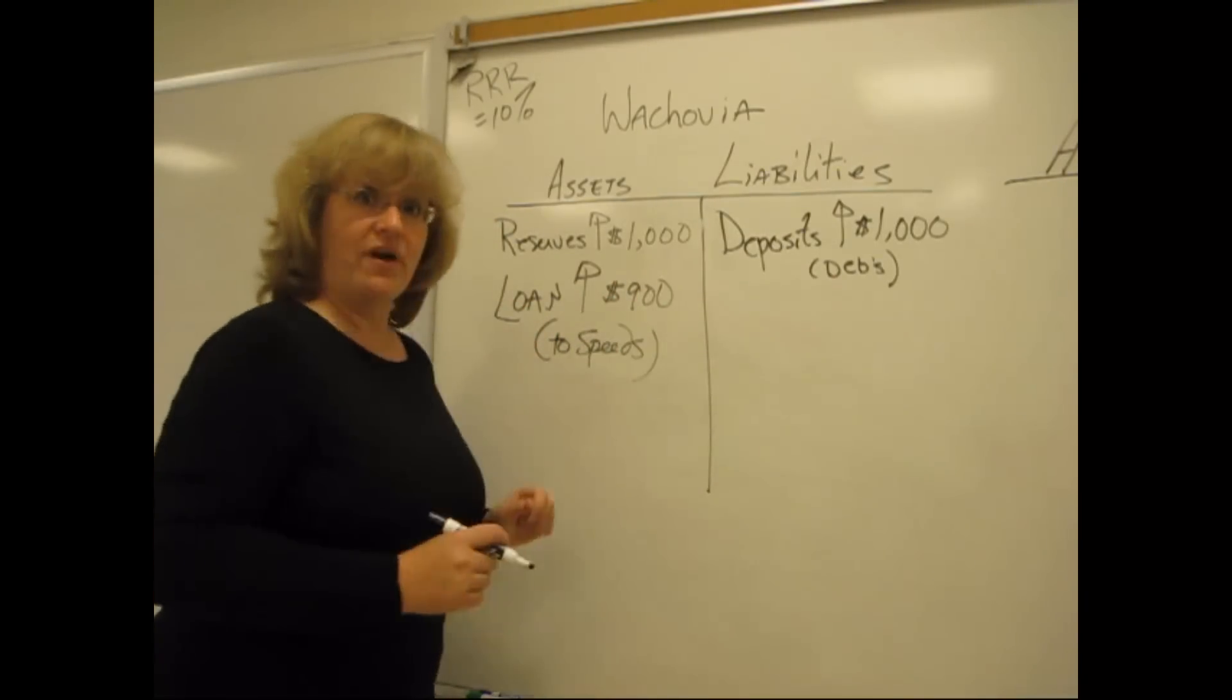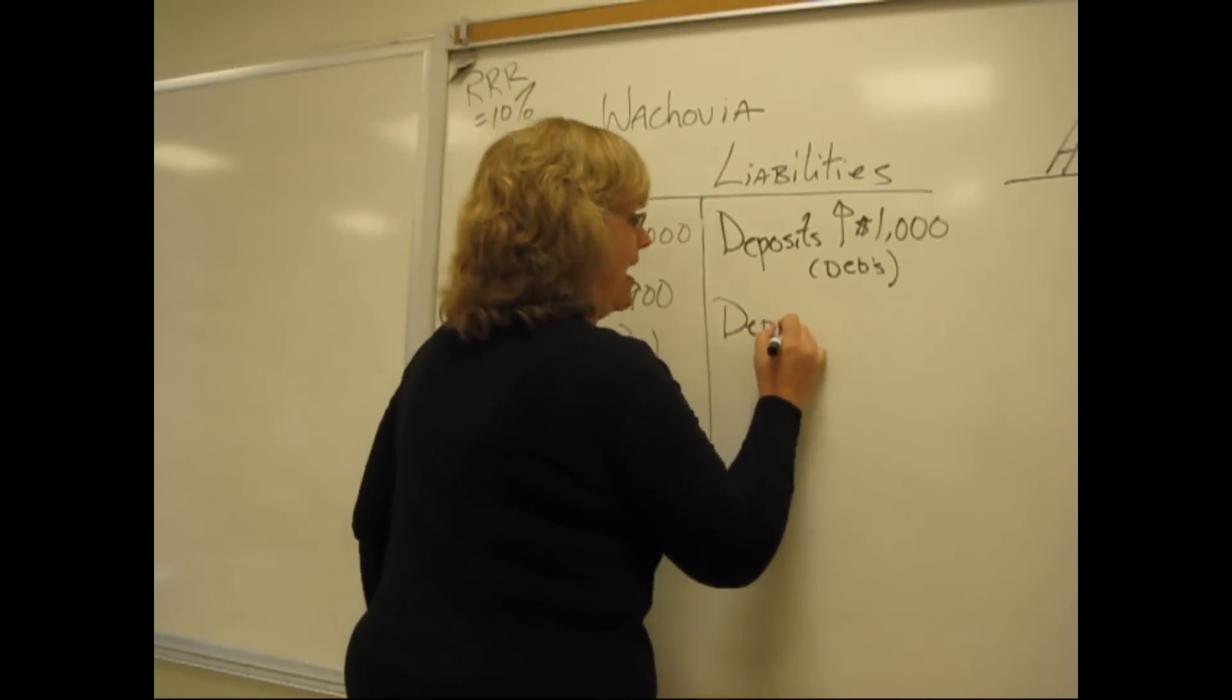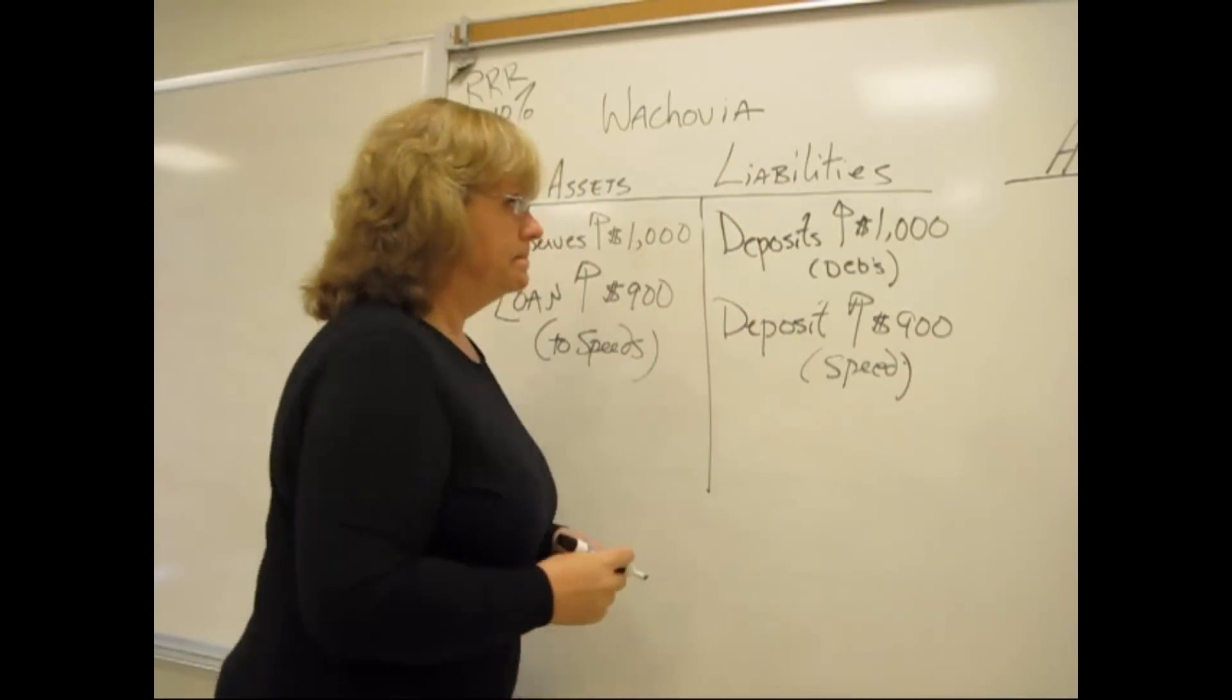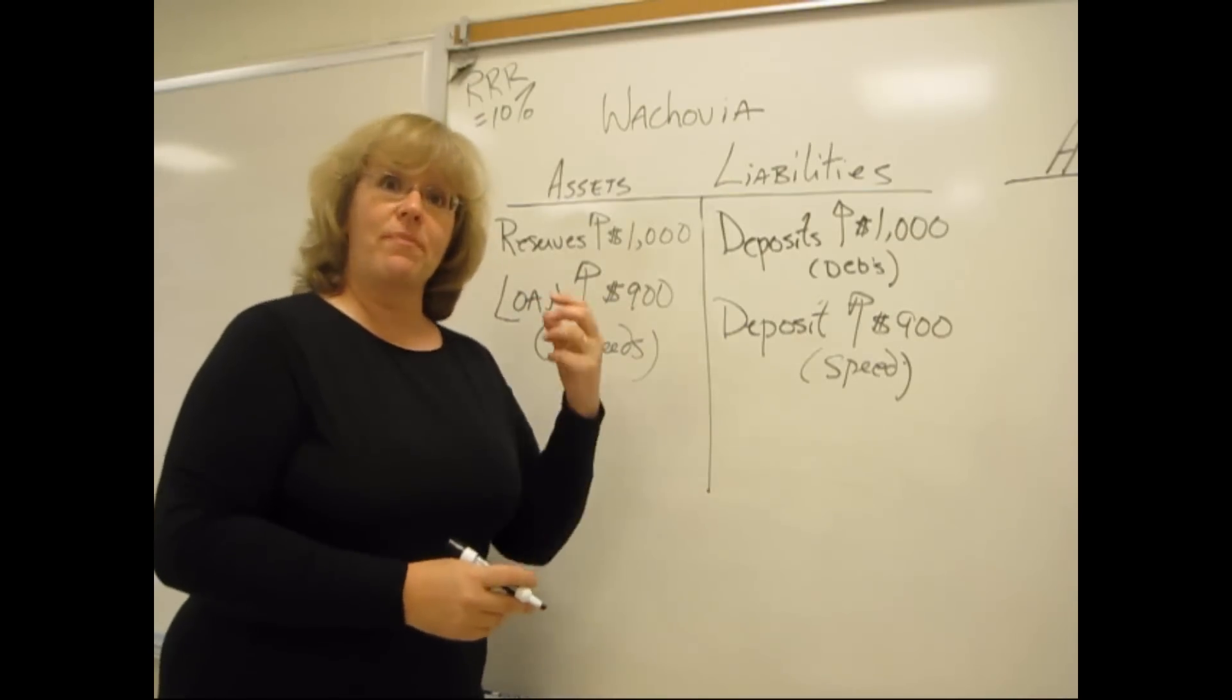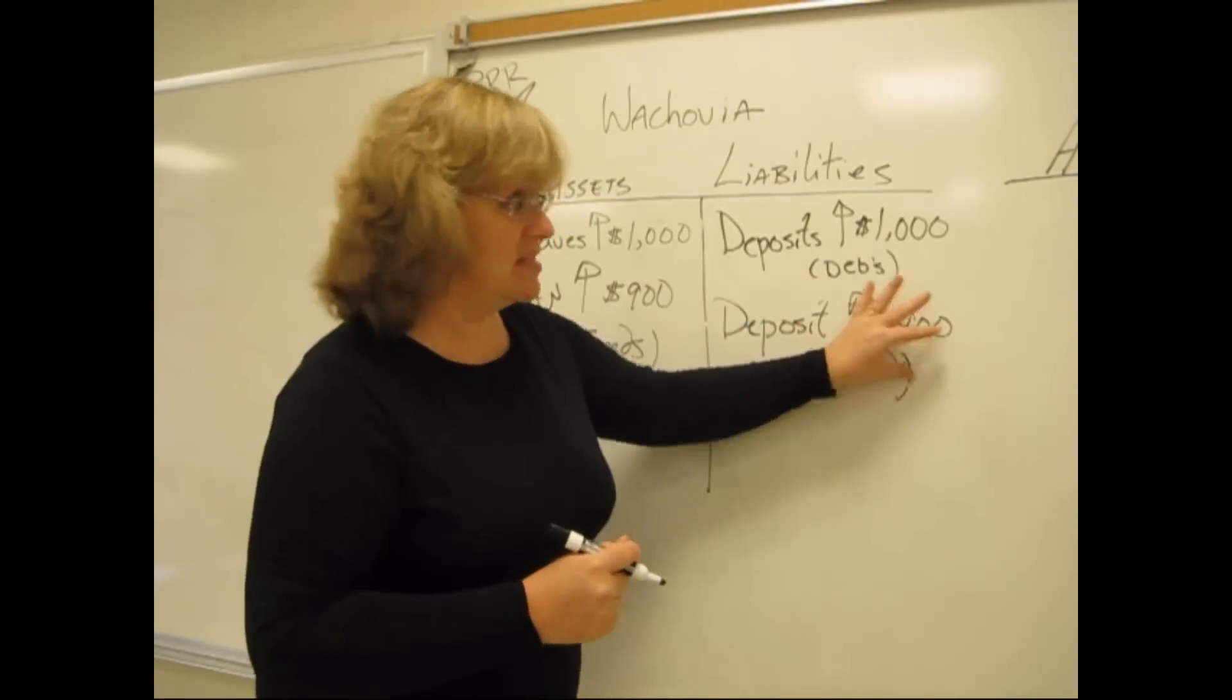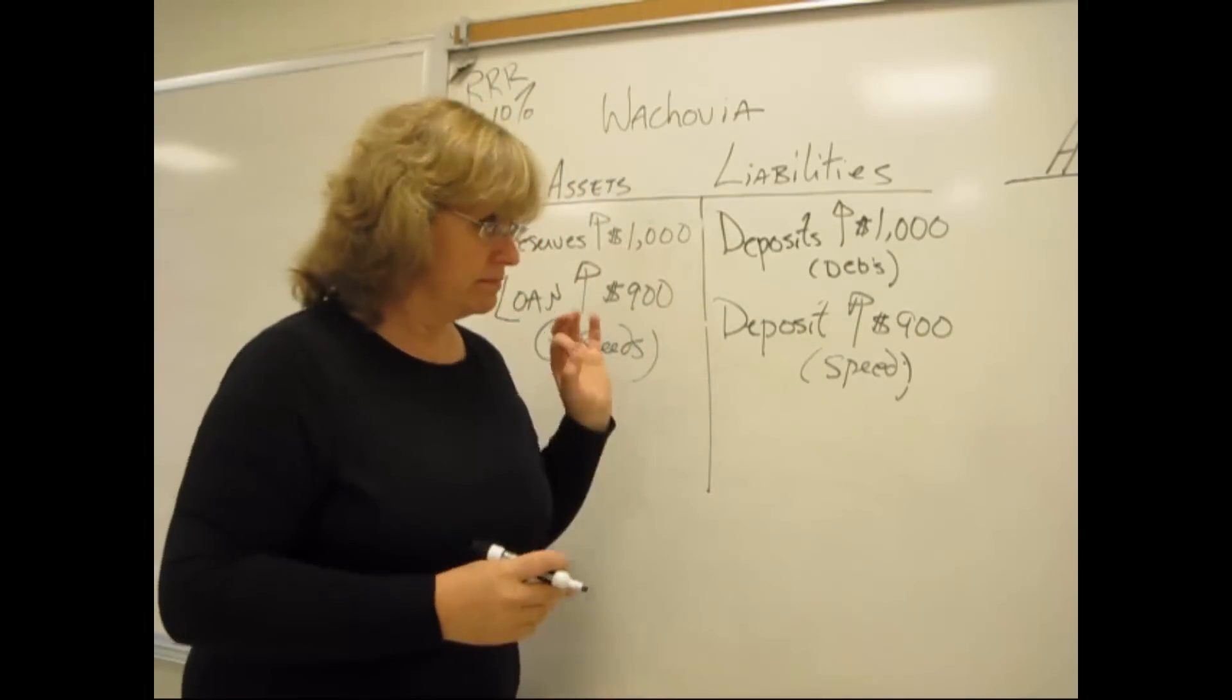Speed will leave the bank with the loan contract that he signed in one hand. That's an asset for Wachovia because Wachovia is going to expect that money back from Speed at one point or another. And he's also going to have a check in the other. And that's an increase in deposits of $900 that belongs to Speed. This particular transaction represents an asset for Wachovia, money that Speed's going to have to pay them back. In Speed's other hand, as he walks out of the bank, he's going to have a check, and that's what this particular transaction represents. Again, everything balances. $1,000 plus $900, $1,000 plus $900.